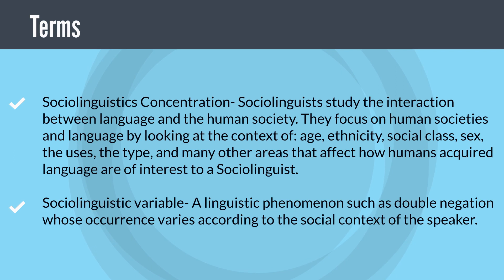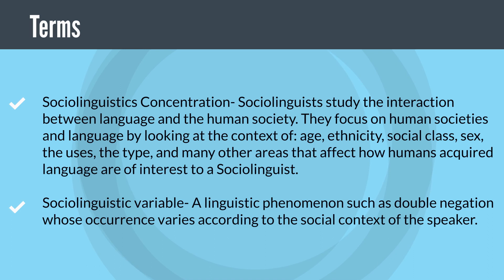Sociolinguistics concentration: sociolinguists study the interaction between language and human society. They focus on human societies and language by looking at the context of age, ethnicity, social class, sex, the uses, the type, and many other areas that affect how humans acquire language — all of which are of interest to a sociolinguist.